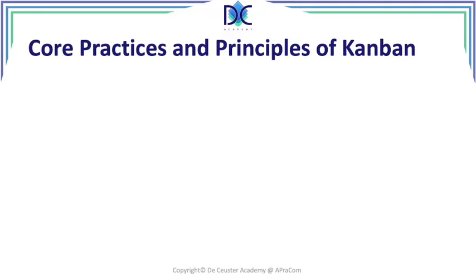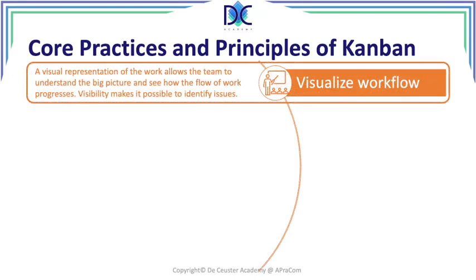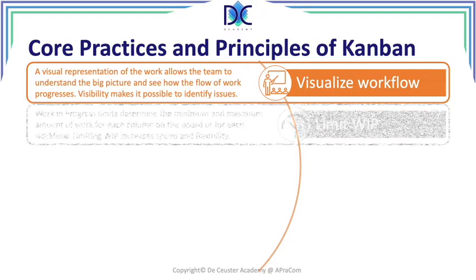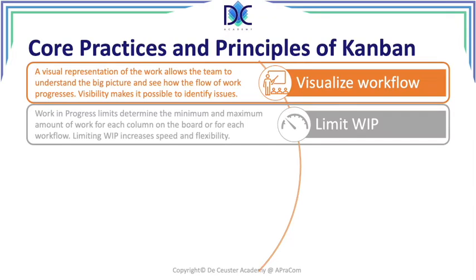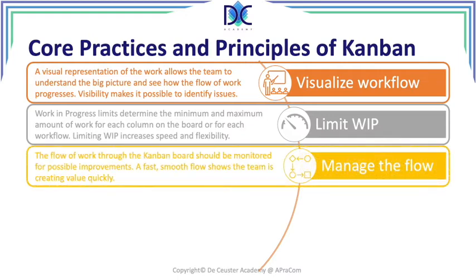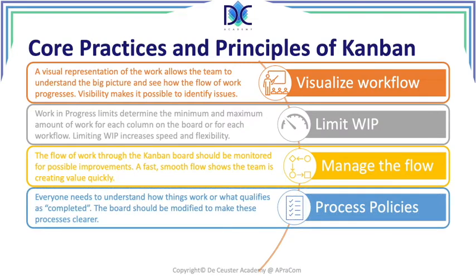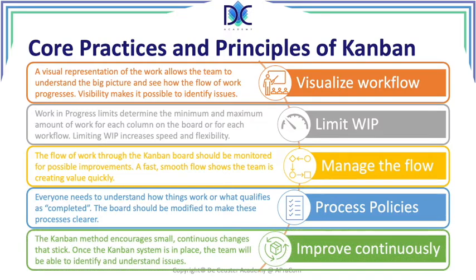When we look at the core practices and principles of Kanban, it's a little different. We have a constant flow — we have to visualize the workflow. It's a flow system, not a sprint system. We have to limit the work in progress so that activities are not waiting for people — the activities are limited to the number of people available at that moment. We manage the flow through the Kanban board, set process policies, and finally, improve continuously — which is also what Kaizen means: continuous improvement.